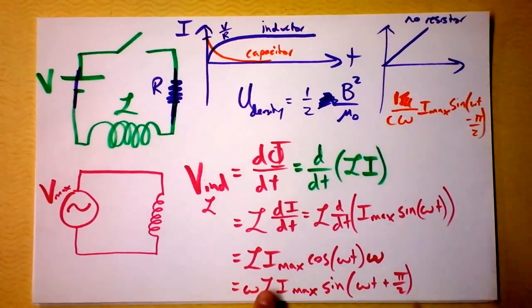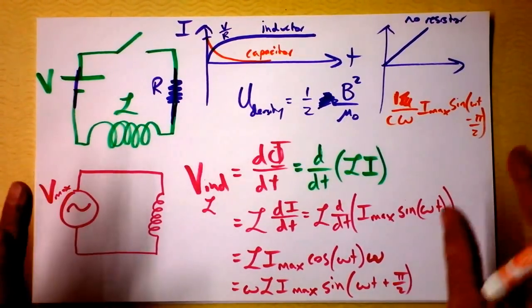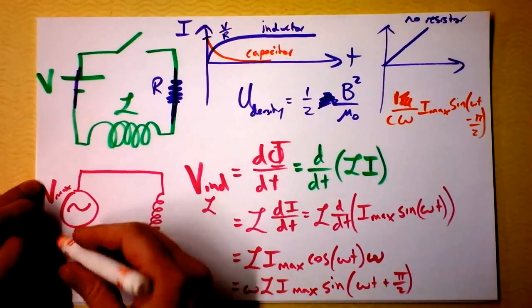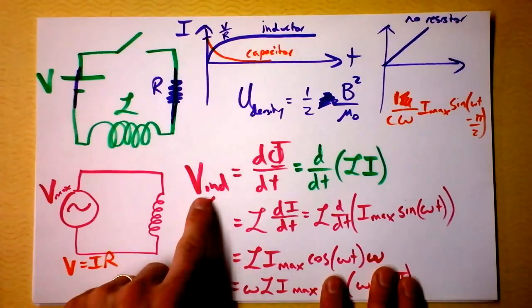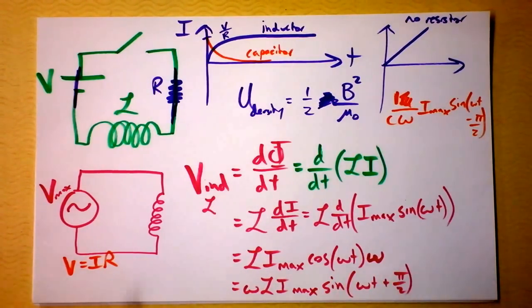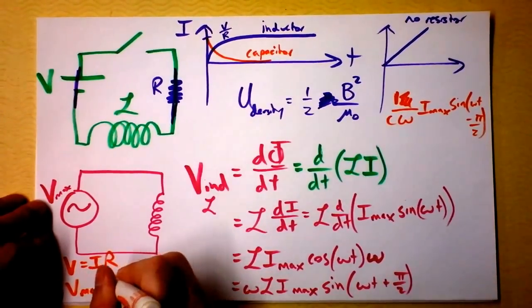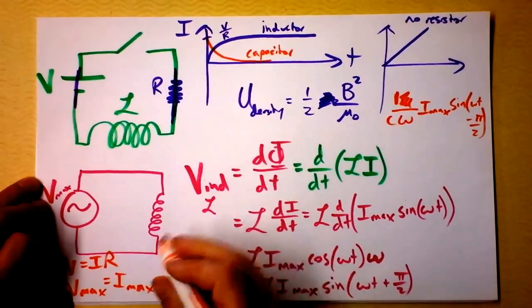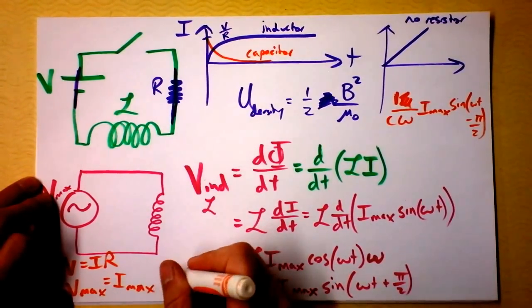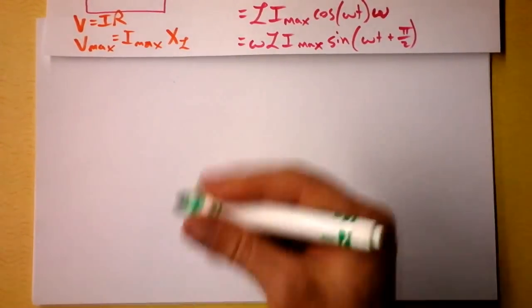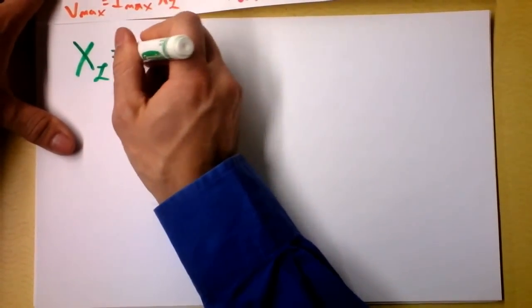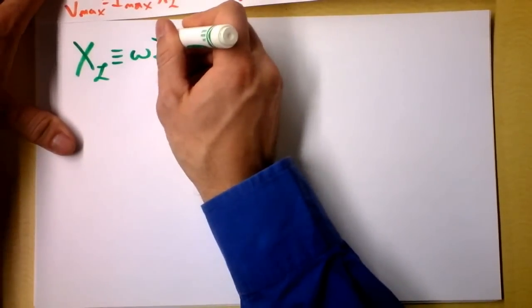This looks like an Ohm's Law sort of thing — V = IR. If I just think about maxima, the sine gives me 1, so the maximum voltage equals the maximum current times this quantity. I'm going to define that quantity as the inductive reactance, X_L. So V-max = I-max · X_L, and inductive reactance is simply omega times the inductance of the inductor.